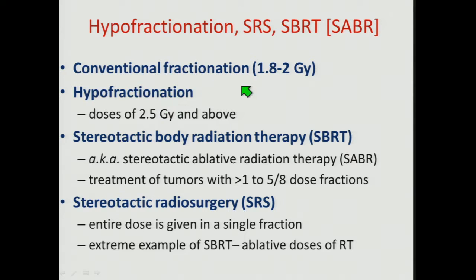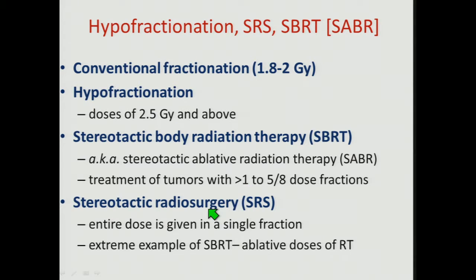Conventional radiation therapy is about 2 gray — I've got 1.8 to 2 gray. As a radiobiologist, I'd say anything above 2.5 is hypofractionated, or anything above 3 gray. Stereotactic or SBRT — anything greater than 1 fraction, up to 5 to 8 fractions, with a dose size bigger than conventional. And of course, SRS is the entire dose given in a single fraction, which is really an extreme example of SBRT. So my definitions will run through this category.